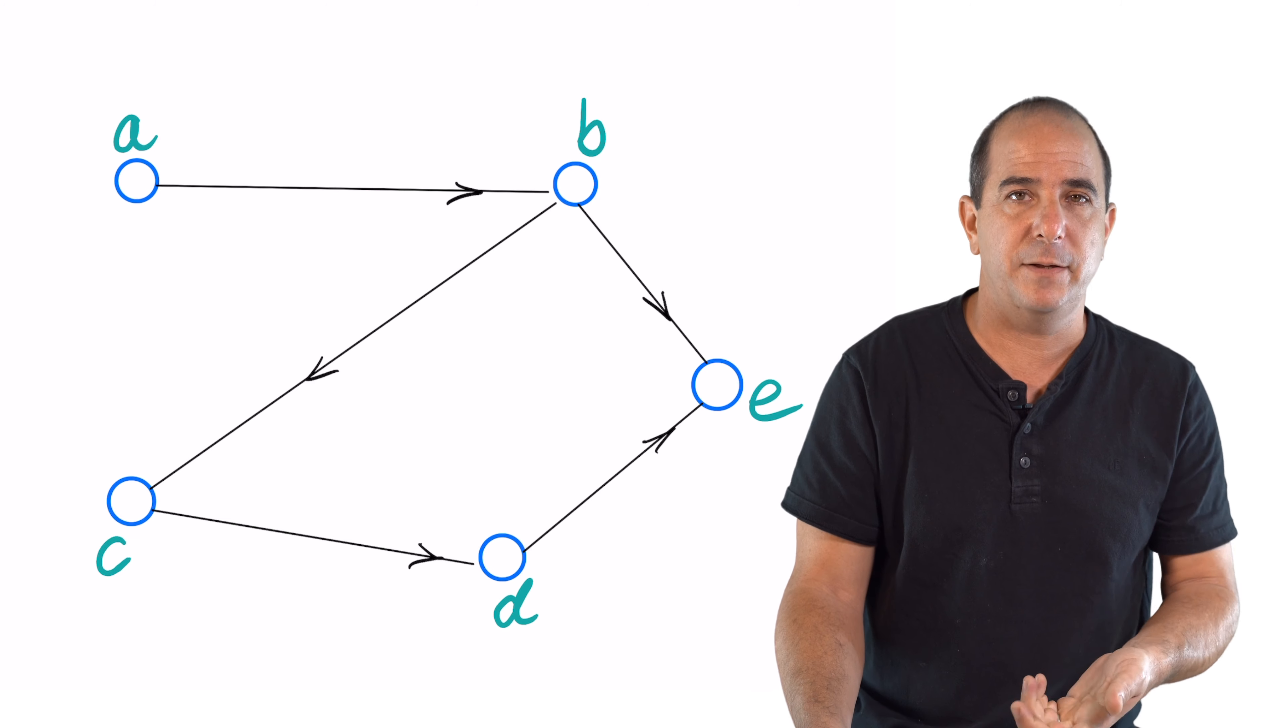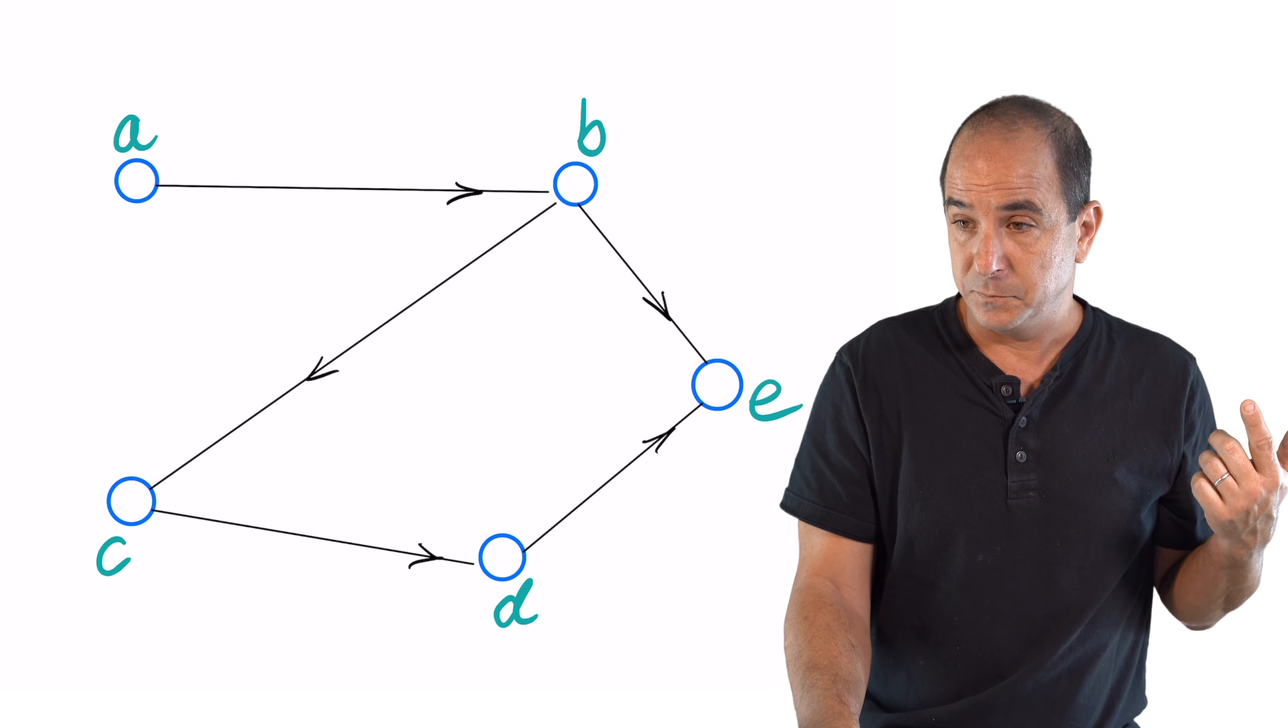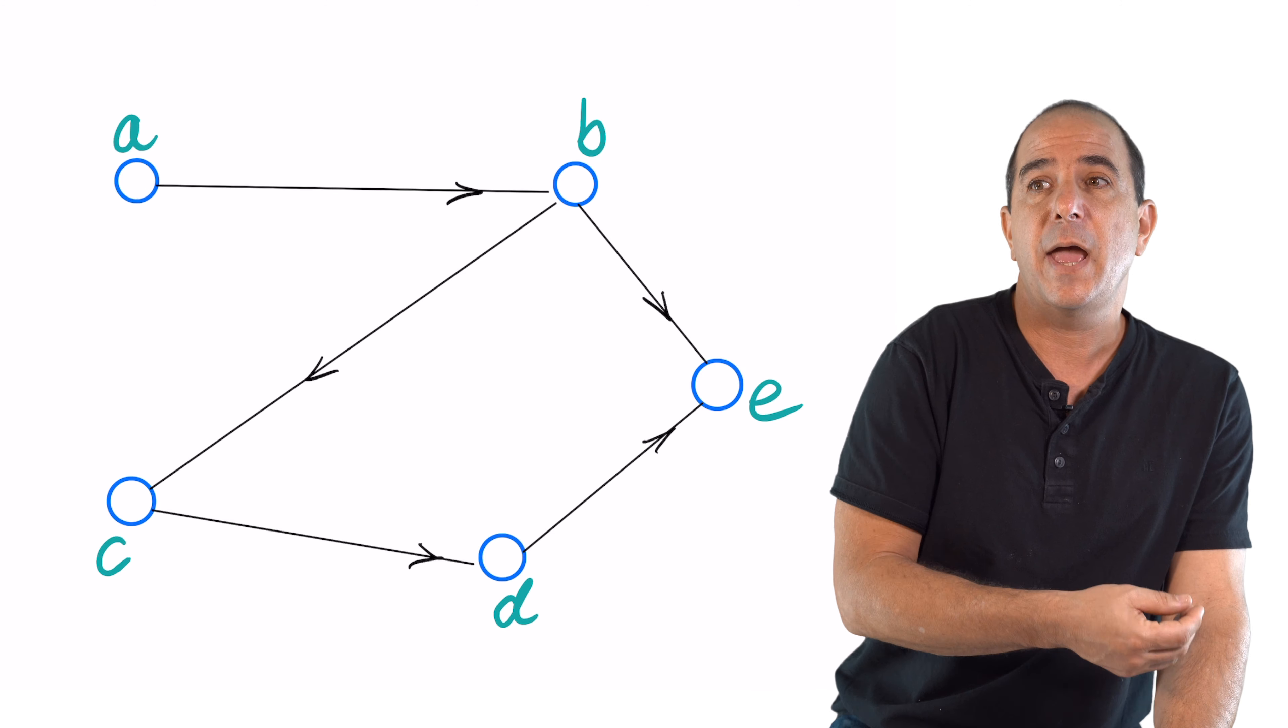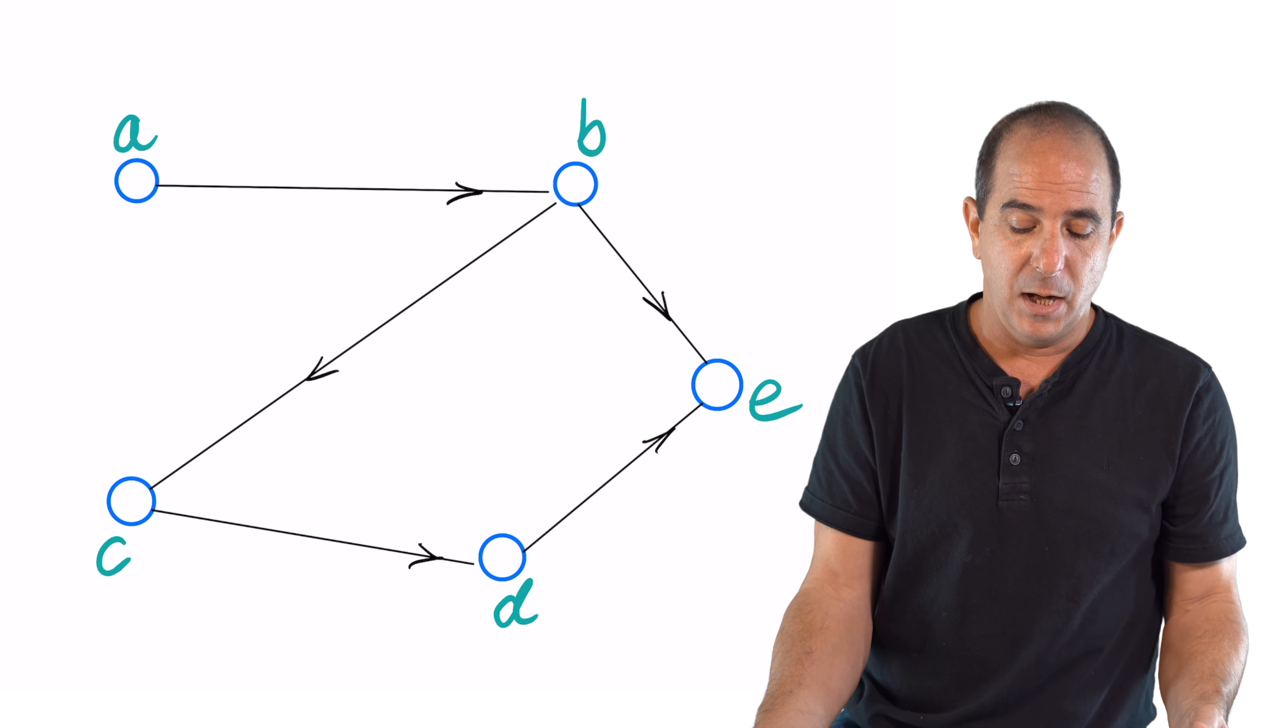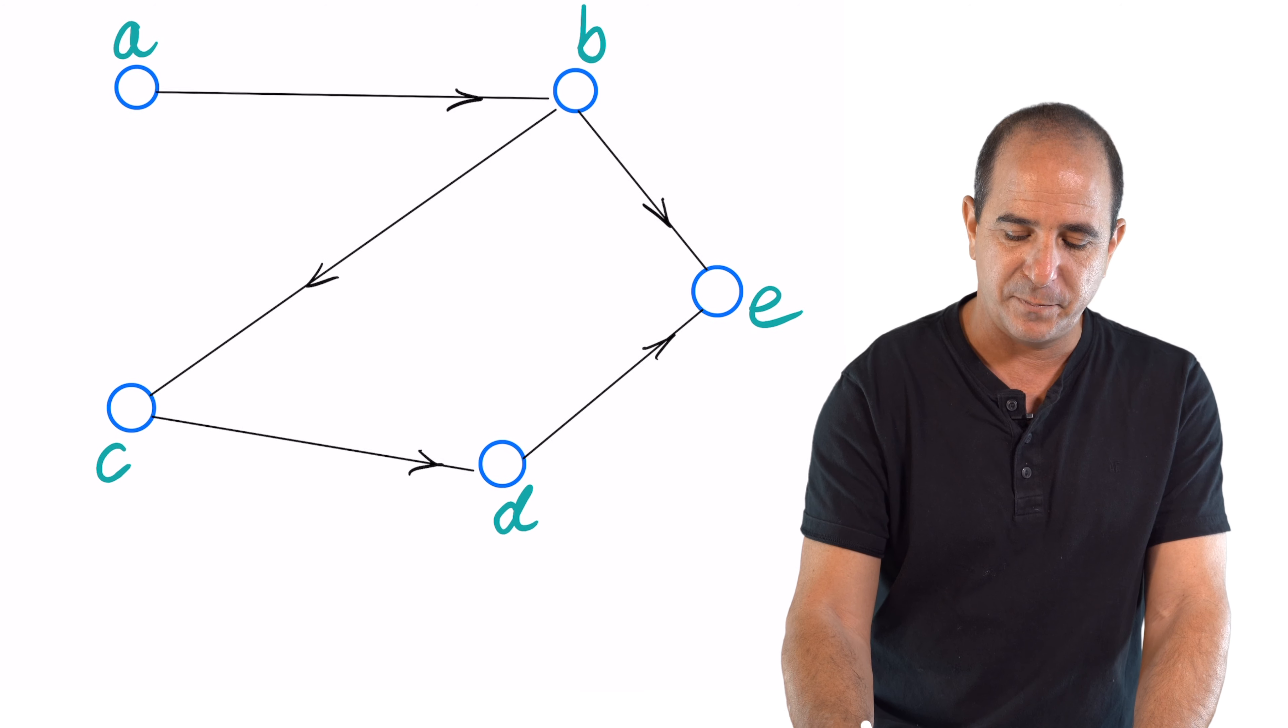The main motivation for a directed graph in the example of road networks is a one-lane road. So some roads are just connecting from A to B, and there's no road that goes backwards. In this example, we might consider what is the shortest path.